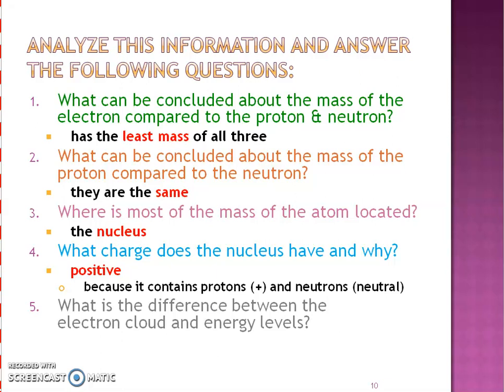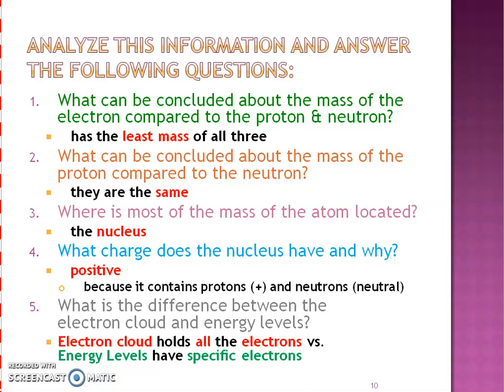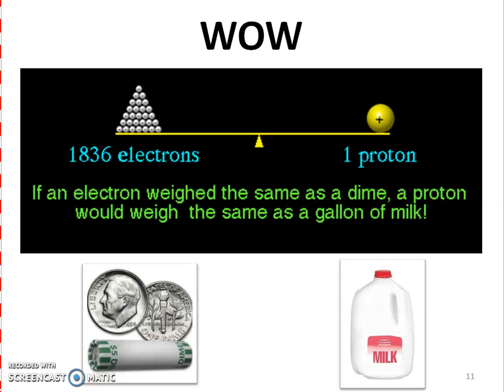Number five, what's the difference between the electron cloud and energy levels? I just want to remind you, the electron clouds are going to have all the electrons in that atom. But energy levels are going to contain specific electrons. And we're going to talk later on about how many electrons are in each of those energy levels. So I thought this was an interesting pause. How much a proton weighs versus how much an electron weighs and what that comparison would be like.